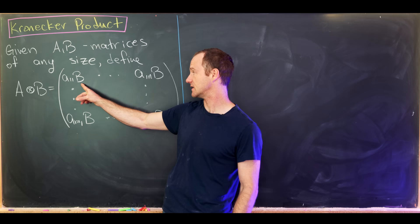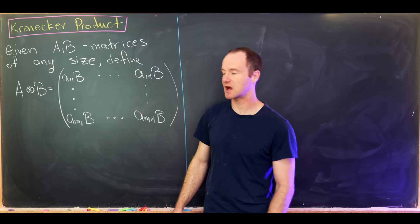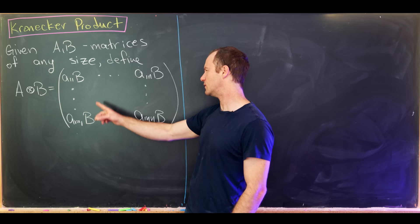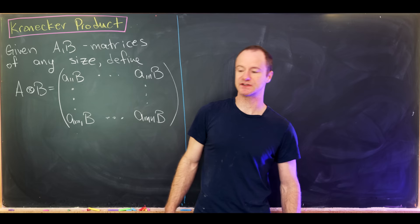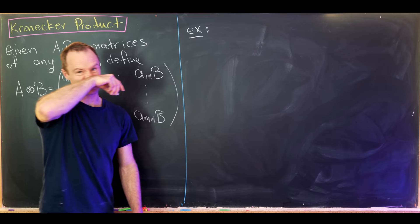The next term is the a₁₂ entry of A times the entire matrix B, all the way up to the a₁ₙ entry of A times B. We fill out the rest of the product similarly, so way down in the last block we have the aₘₙ entry of A times the matrix B. Let's look at an example of this Kronecker product to get a better idea of how it works.